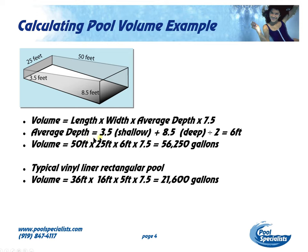Our average depth in our shallow end is three and a half feet, and in the deep end it's eight and a half feet. We add those together, divide by two, and we come up with six feet. So if we calculate the volume — 50 feet in length, 25 feet in width, an average depth of six feet, our constant multiplier of 7.5 — that gives us 56,250 gallons.